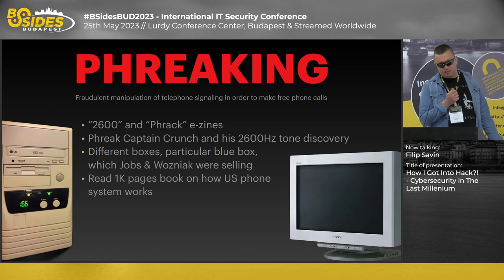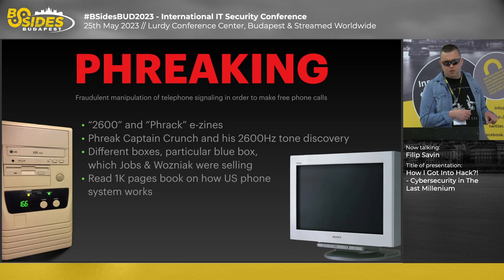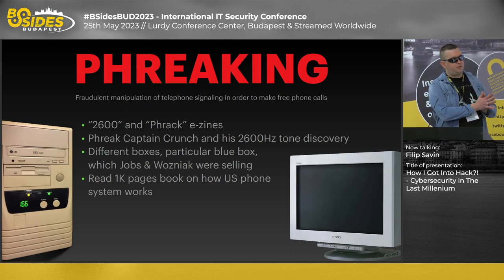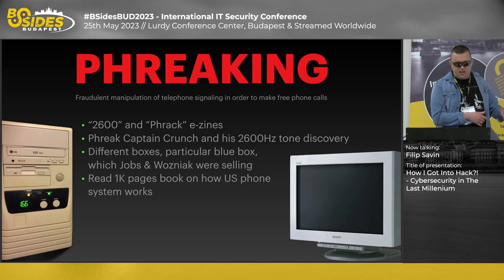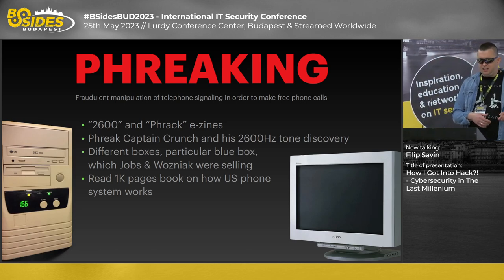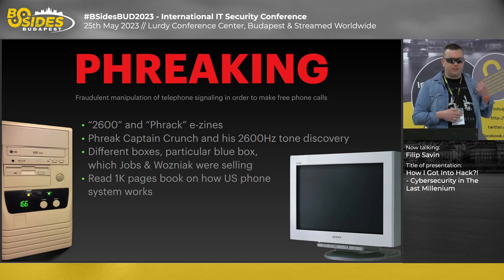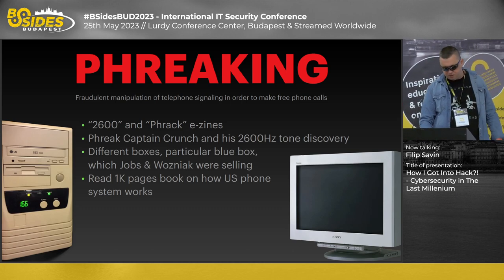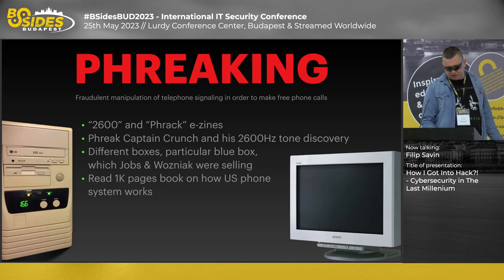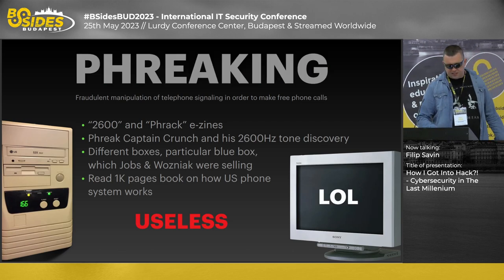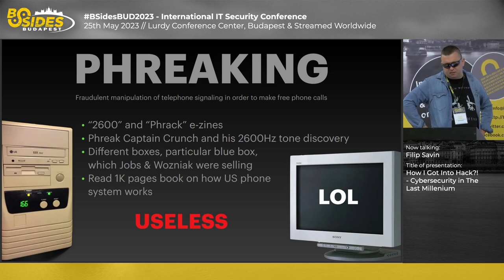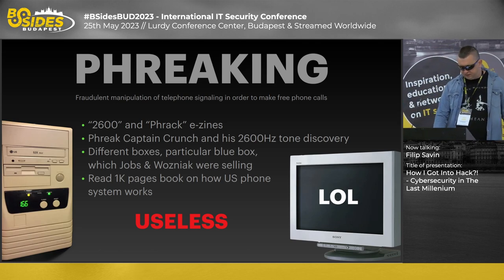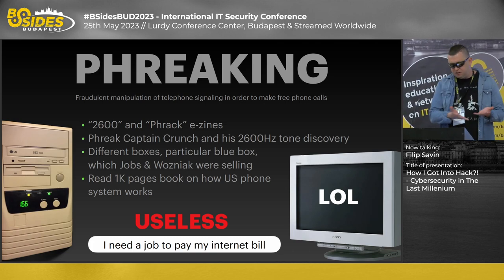The blue box allowed you to intercept a phone line, enter command mode, and do phone call routing. There's a famous story of one guy who routed a call from the US to Europe, Europe to Asia, Australia, Hawaii, and then called his neighbor next door — the conversation had about a 10-second delay because the signal was traveling all around the world. I read a lot about phone systems, but I realized it was useless because our new phone lines were based on different technology with signaling and voice on separate channels. So inevitably, I needed a job to pay my internet bill.